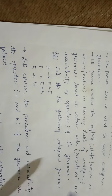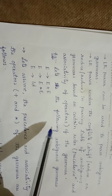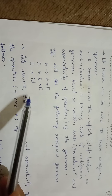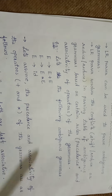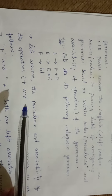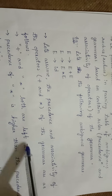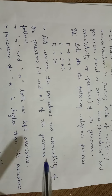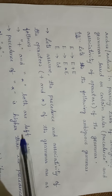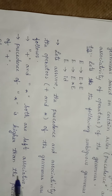Let's take the following ambiguous grammar as an example: E tends to E plus E, E tends to E star E, and E tends to id. We assume the precedence and associativity of operators plus and star as follows: both plus and star are left associative, and the precedence of star is higher than the precedence of plus.